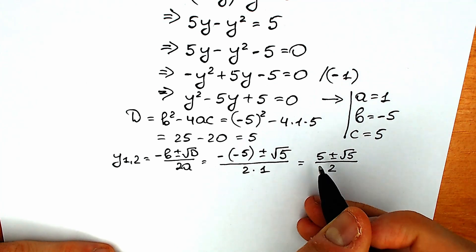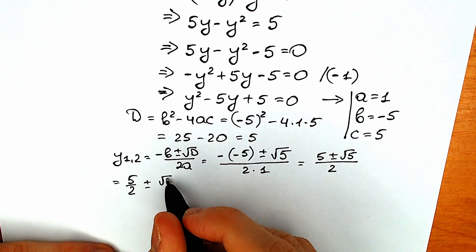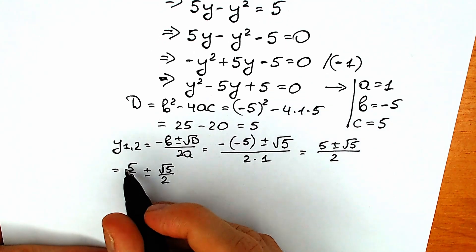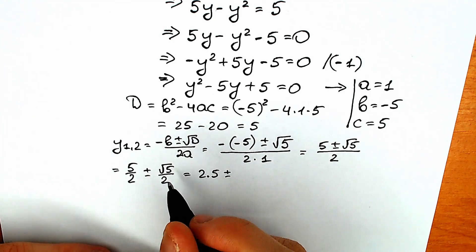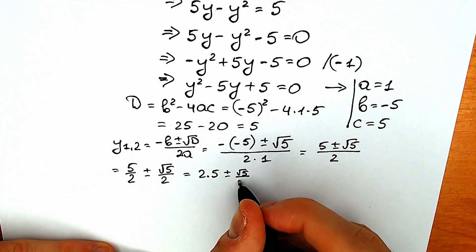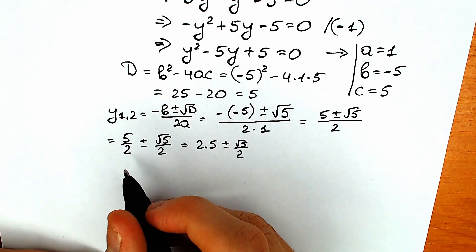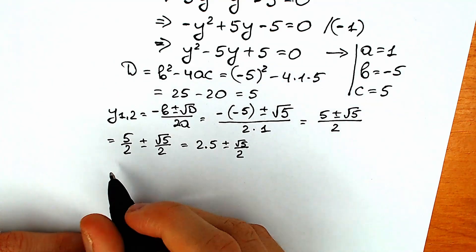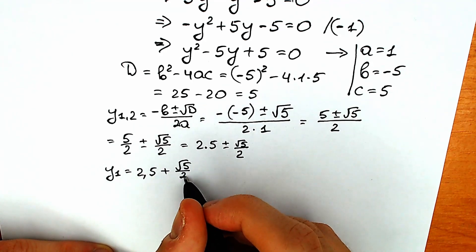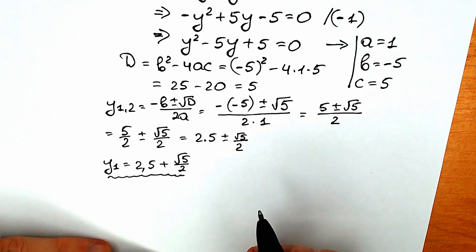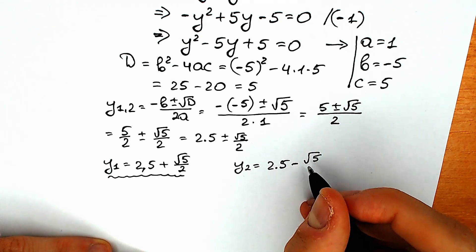I prefer to divide this out, so we get 5 over 2 plus or minus the square root of 5 over 2. Writing the decimal value: y equals 2.5 plus or minus square root of 5 over 2. So y₁ equals 2.5 plus square root of 5 over 2, and y₂ equals 2.5 minus square root of 5 over 2.